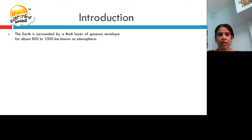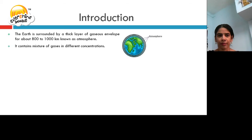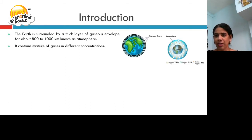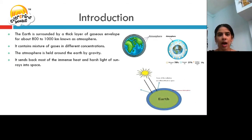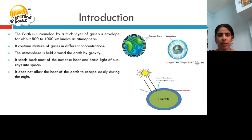The earth is surrounded by a thick layer of gaseous envelope for about 800 to 1000 km. This layer is known as the atmosphere. It contains a mixture of gases in different concentrations: nitrogen 78%, oxygen 21%, carbon dioxide 1%. The atmosphere is held around the earth by its gravity. It sends back most of the immense heat and harsh light of sun rays into space, and does not allow the heat of the earth to escape easily during the night. Therefore, plants and animals can survive on the earth.